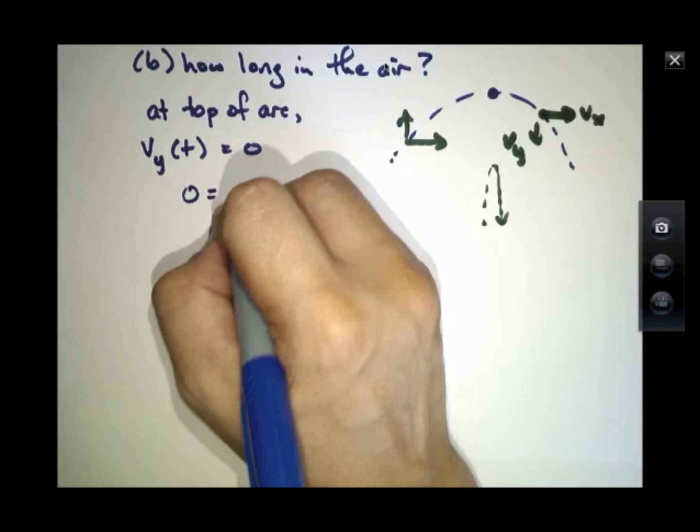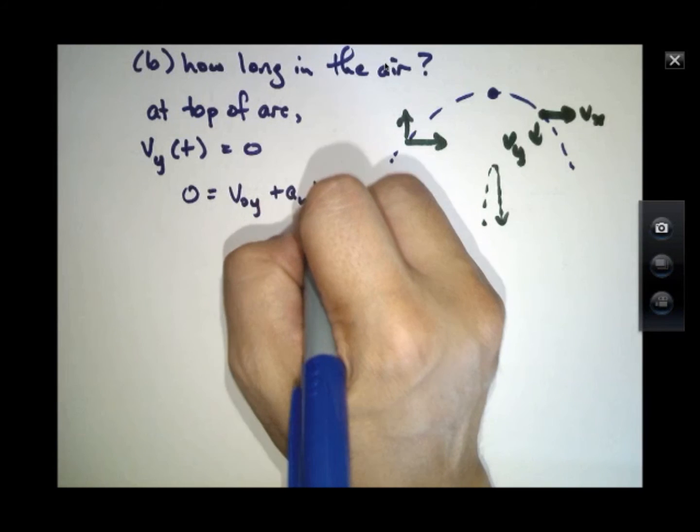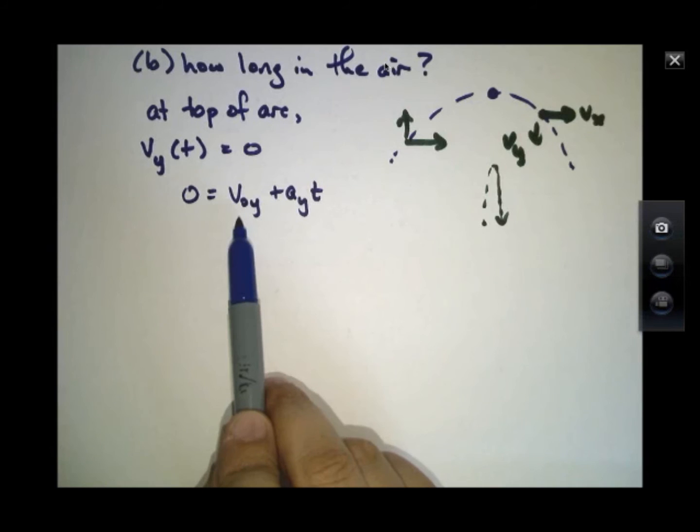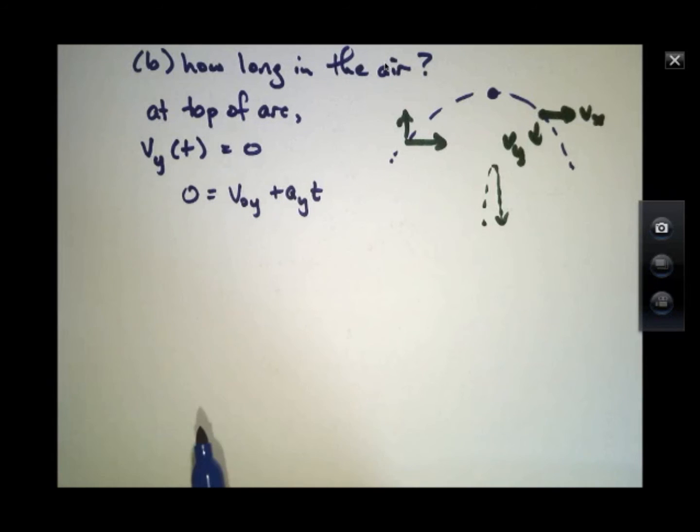So we'll say zero equals V-naught in the y direction plus AYT. And now we have a lot of unknowns here. We have to fill in for what Vy-naught in the y direction is, the vertical initial component of velocity and the acceleration in the y direction.